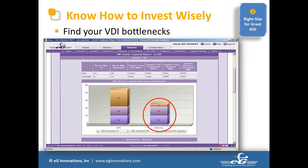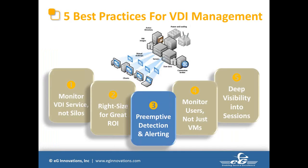On VDI bottlenecks and scaling: rather than blindly throwing storage and disk at a problem, capacity planning reports show you that in this cluster, handling this many VMs, if you move to additional VMs, how much resource you need — so you can scale proportionally. This is also tied into preemptive detection and alerting.